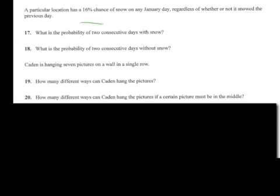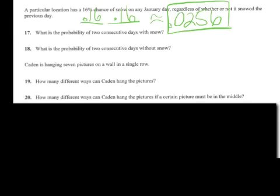So day one and day two. The probability that it snows is .16 of that day, and the next day .16. So if you do .16 squared, you are going to get approximately .0256, which is about a 2.56 percent chance that it is going to snow in this town two days in a row.